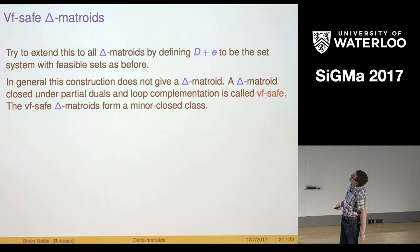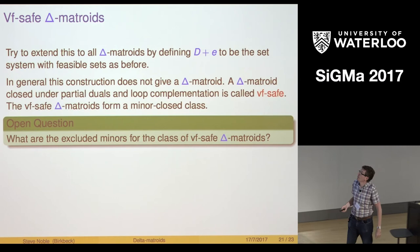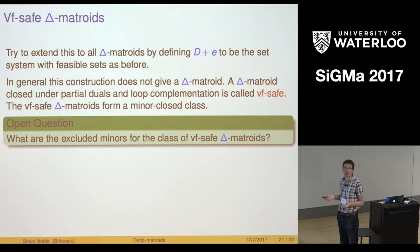We can form the class of delta matroids which are closed under partial duals and this operation, which we'll call loop complementation. It's a new operation. They're called VF safe. It's a minor closed class. We don't know what the excluded minors are or even really have any clue about whether there's even a finite number. Looking at small examples suggests there are lots and lots of them, but it's all very unclear. That's a question I'd like to understand.